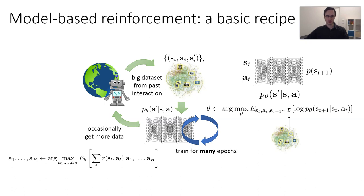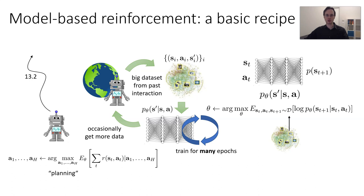Once we've trained this model, we can use it to do control. There are a number of ways to use a model for control, but the simplest one — and the one we'll explore in all the methods I'll discuss today — is to simply plan through the model, with no additional policy or value function being learned. Planning here is simply an optimization problem: choosing a sequence of actions a1 through aH that maximizes the expected value of the reward, where the expectation is taken with respect to this model. So you could imagine your robot picks some sequence of actions, predicts the total reward — maybe 13.2 — picks a different set: 23.4, then 56.3, and takes the best one.